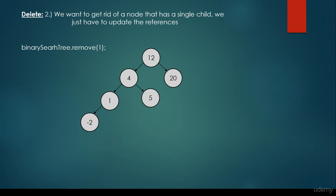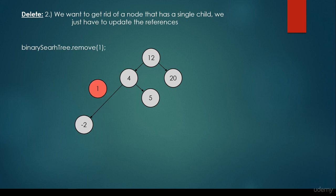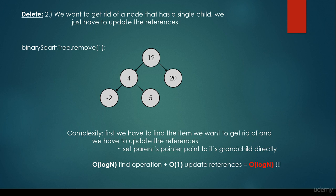What about the second case? We want to get rid of a node that has a single child — we just have to update the references. So we would like to get rid of node one. First we have to look for it, so we go to the left, we go to the left, until we bump into node one. We just have to set the parent's pointer to point to the child instead. We make sure that four is pointing to minus two instead of one. The find operation is logarithmic, updating the references is constant time complexity, so the overall complexity is O(log n), logarithmic.